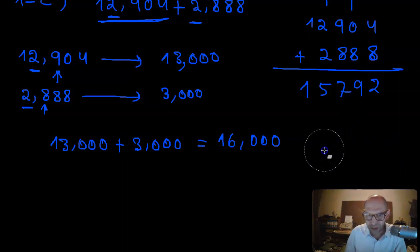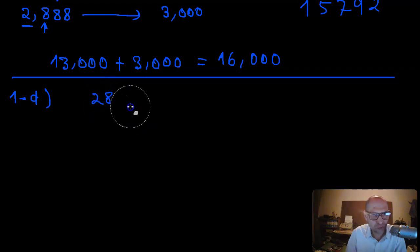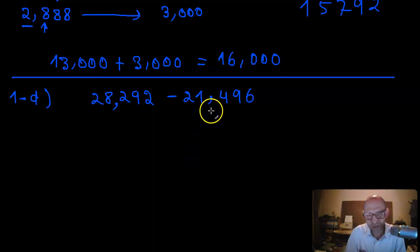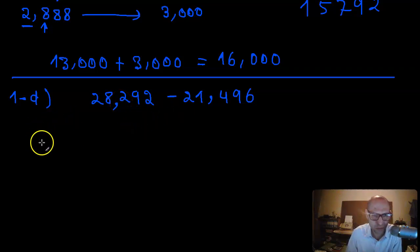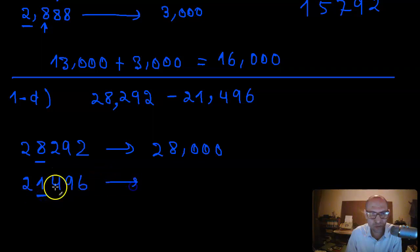That was part C. Now we have part D: 28,292 minus 21,496. I would round both numbers to the thousands place value. 28,292 rounded to thousands gives 28,000, and 21,496 rounded to thousands gives 21,000.